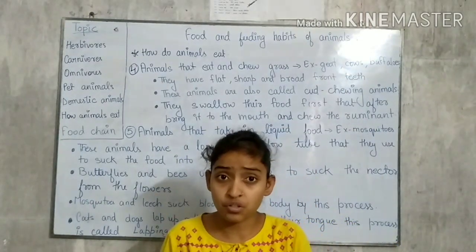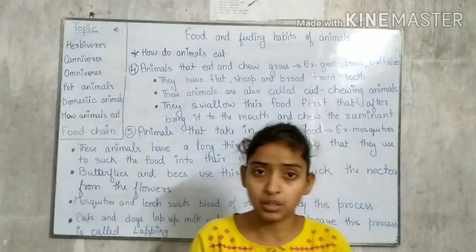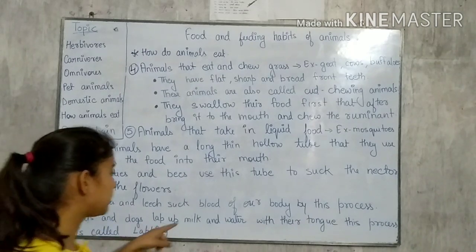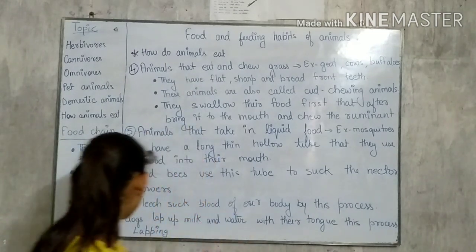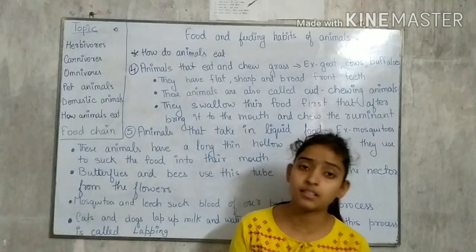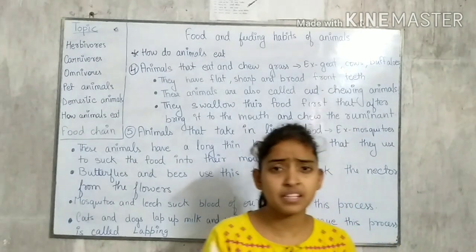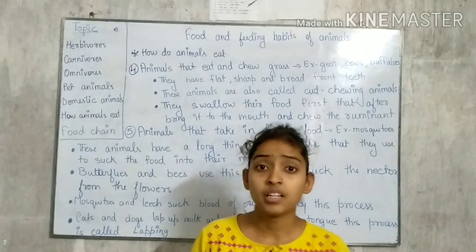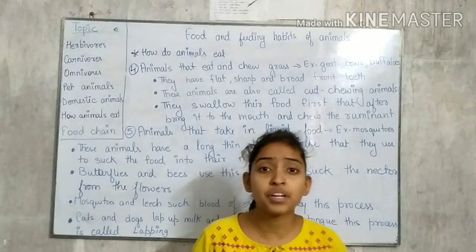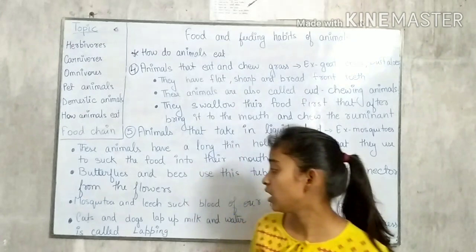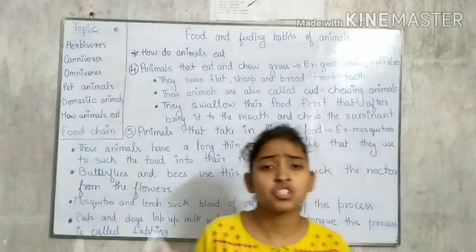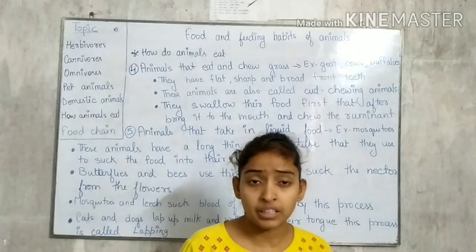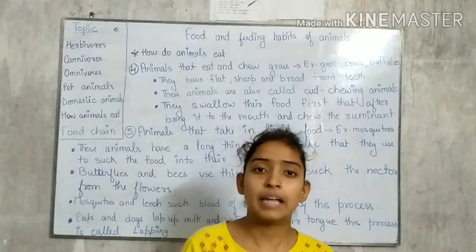Third is cats and dogs, which lap up milk and water with their tongue. This process is also called lapping. Have you ever seen cats or dogs drinking milk or water? They always use their tongue. The process by which cats and dogs drink water or milk using their tongue is known as lapping.